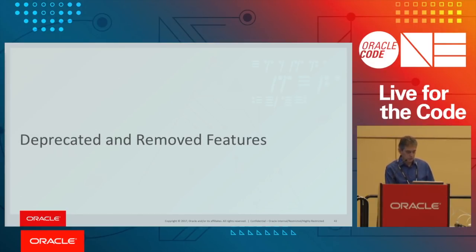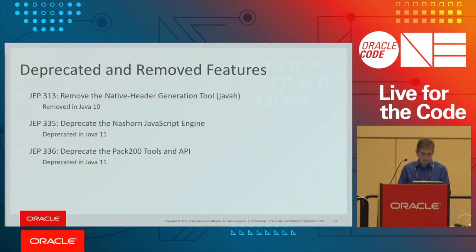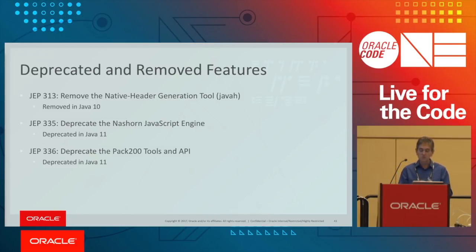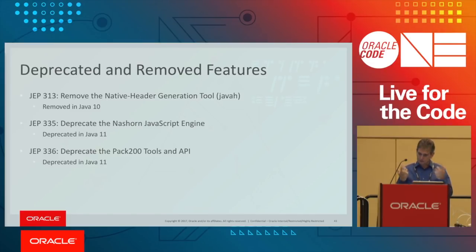A quick note on deprecated and removed features. In JDK 10 we removed javah — not controversial since javac -h does the same thing. In JDK 11 we deprecated the Nashorn JavaScript engine and deprecated Pack200. That was more controversial, but please note: deprecated does not mean removed. These features are still available, still receiving bug and security fixes, just no longer actively developed. There are currently no plans to remove them, and before removal we would need to create a removal JEP and socialize it with the community.